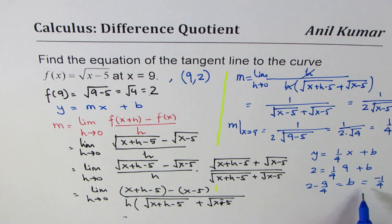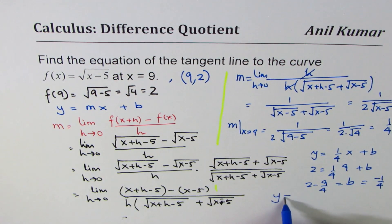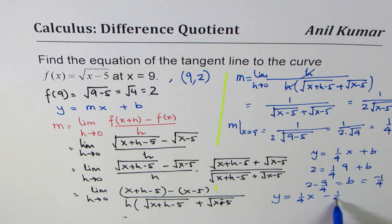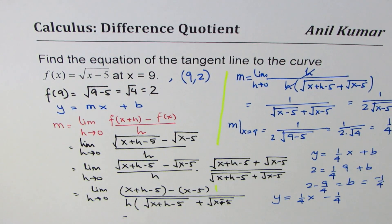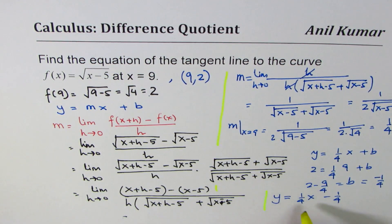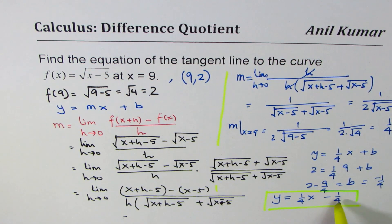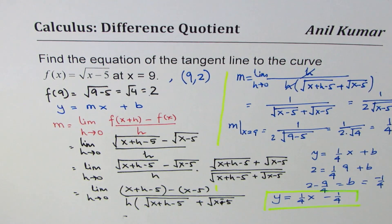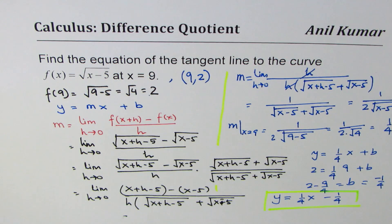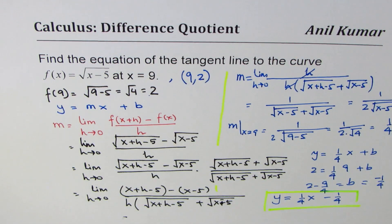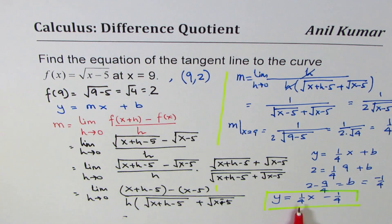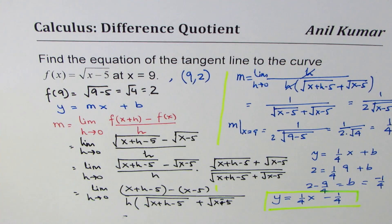So that gives you the equation, which is y equals 1 over 4 x minus 1 over 4. So that is how you can get equation of tangent line. Slope is 1 over 4 and y intercept is minus 1 over 4. So I hope the steps are absolutely clear. We have applied difference quotient to find slope at a given point and used slope in the form y equals mx plus b to find equation of tangent line. I'm Anil Kumar and I hope that helps. Thank you and all the best.